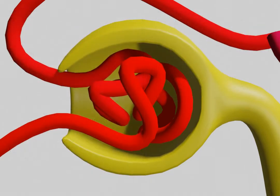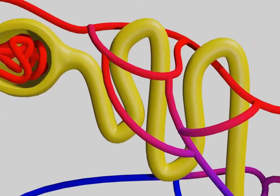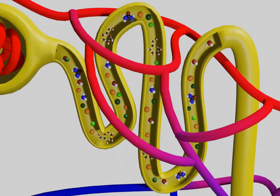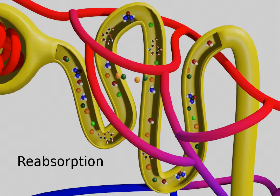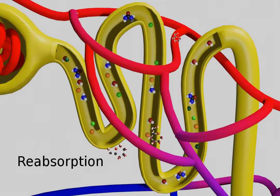The filtrate moves from Bowman's capsule into the proximal tubule, where a lot of solvents are pulled back into the blood. This is called reabsorption. About two-thirds of the sodium and chloride return to the blood. We also reabsorb glucose. In a healthy person, virtually all of the glucose will be reabsorbed into the blood.